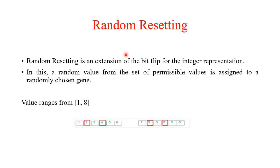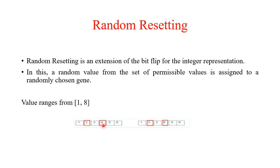Random resetting selects a particular gene and resets it with another possible value. This method is best suited for real value encoding. It is an extension of bit flip mutation, where a random value from a set of permissible values is assigned to a randomly chosen gene. For example, with available values 1 to 8, bit value 2 is substituted with 3 and 4 is substituted with 8.